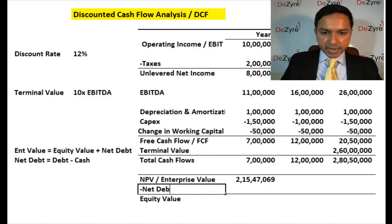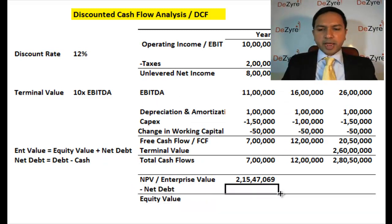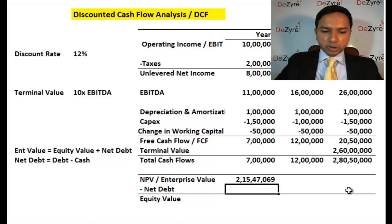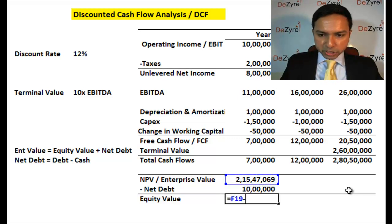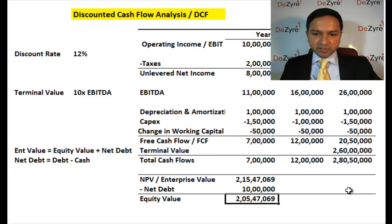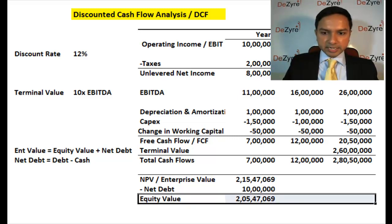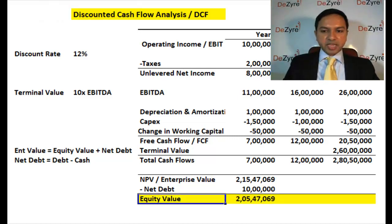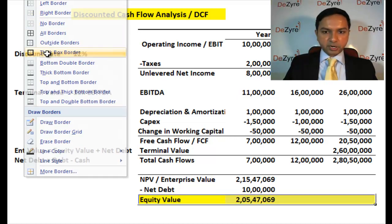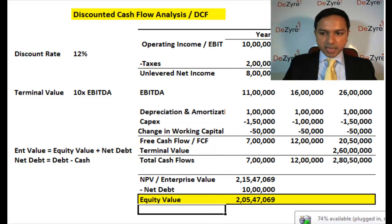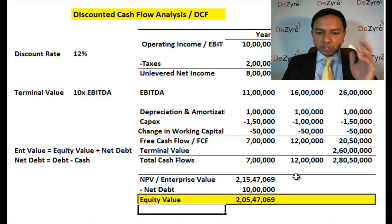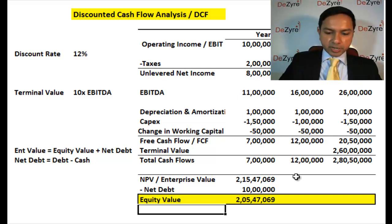To go from enterprise value to equity value, you subtract your net debt. Let's say your net debt is 10 lakhs. Your equity value is therefore your enterprise value minus net debt, which equals 2 crores, 5 lakhs, 47,069. That is the equity value of the company, and that is the whole purpose of doing a discounted cash flow analysis — to arrive at the equity value.